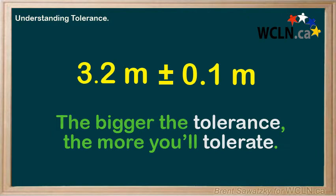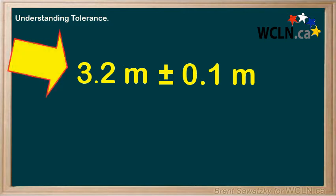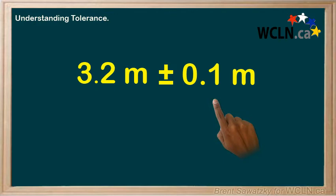So let's look at how designers communicate tolerance. You'll find it very similar to reporting uncertainty in measurements. Designers report the desired dimensions along with the tolerances, like this: 3.2 meters plus or minus 0.1 meters. The 3.2 meters is our nominal value — that's the dimension we're aiming for, that's our goal. The 0.1 meter is our tolerance, indicating what we'll tolerate.